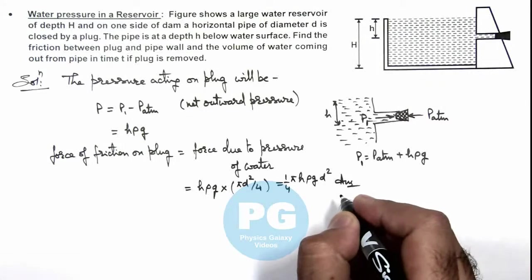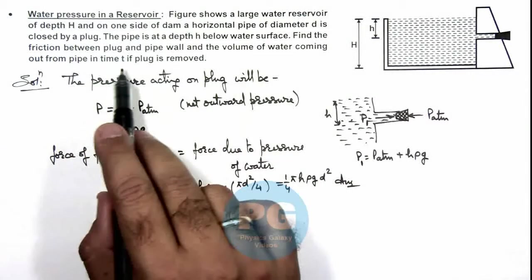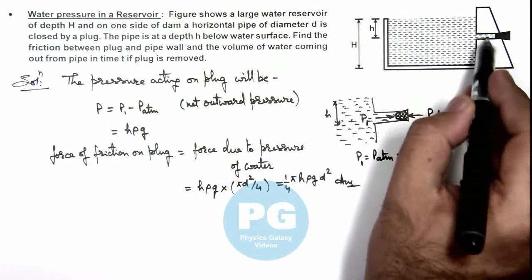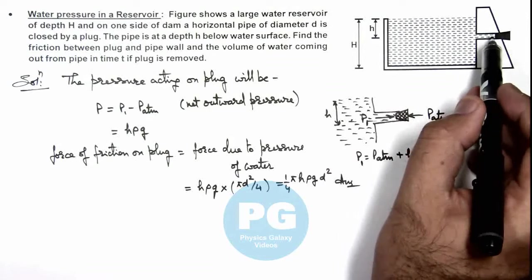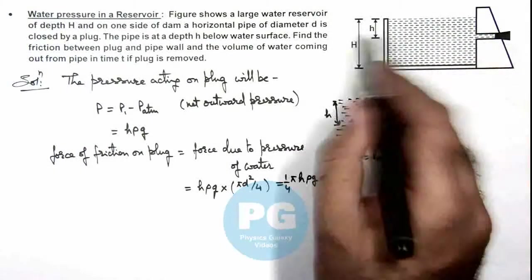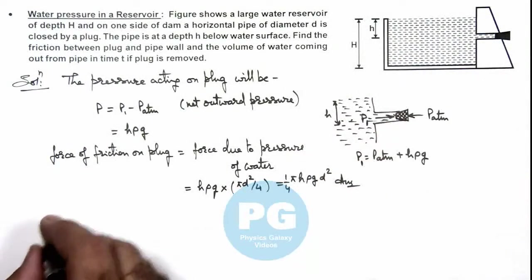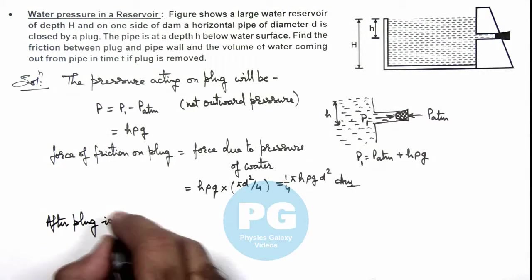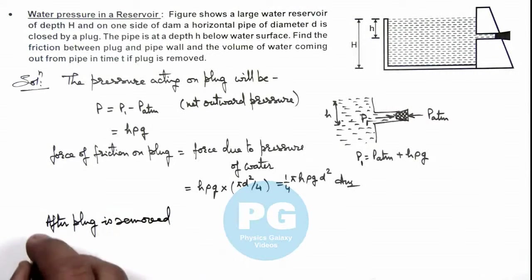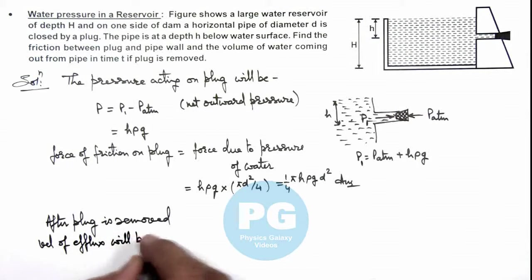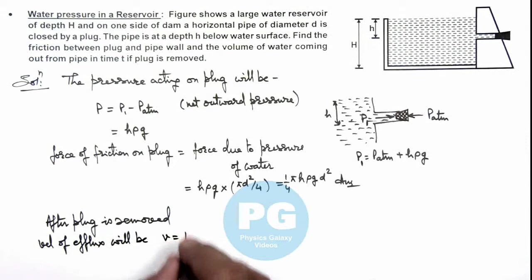We are required to find the volume of water coming out from pipe in time t if plug is removed. If we consider the area of this narrow tube is negligible compared to the total area of the dam, then after plug is removed, velocity of efflux will be √(2gh) by Torricelli's theorem.